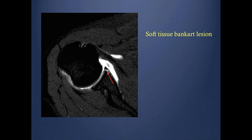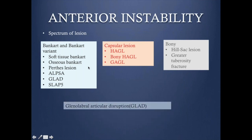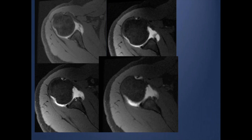We describe glenoid labral abnormalities using a clock position, with the bicipital tendon origin at the superior labrum at 12 o'clock, inferior labrum at 6, anteriorly at 3, and posteriorly at 9. The typical area for a Bankart lesion is the anterior inferior region. In another example showing complete tear of the anterior labrum with medial retraction, loss of the triangular appearance, and anterior cartilage involvement, this would represent ALPSA combined with GLAD. Rather than forcing a single name, it is better to describe the full abnormality.